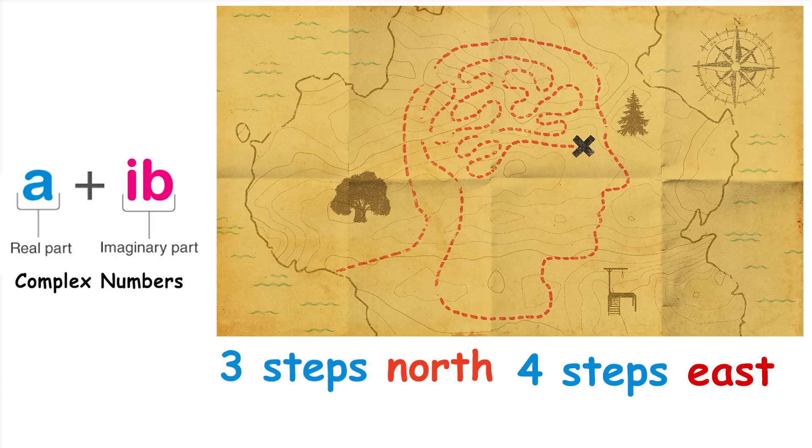In this treasure map, you might see something like three steps north and four steps east. Now, let's translate that into a complex number. The three steps north corresponds to the first number, let's call it A, and the four steps east corresponds to the second number, let's call it B. So, our complex number would be three plus four times I, where I is like a special east-west direction. That's how complex numbers work. They help us understand locations and directions in two dimensions, just like reading a treasure map.